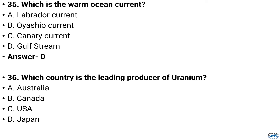Question number 36. Which country is the leading producer of uranium? Option A: Australia, Option B: Canada, Option C: USA, Option D: Japan. And the answer is Option B: Canada.